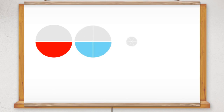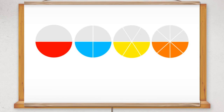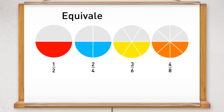If you look at the four circles, you can see that the same amount has been coloured in each circle. So that tells us that one half is equal to two quarters, which is equal to three sixths and is also equal to four eighths. These are called equivalent fractions.